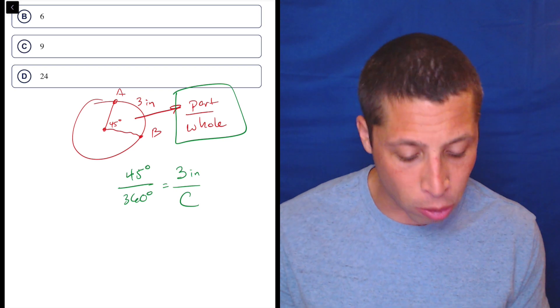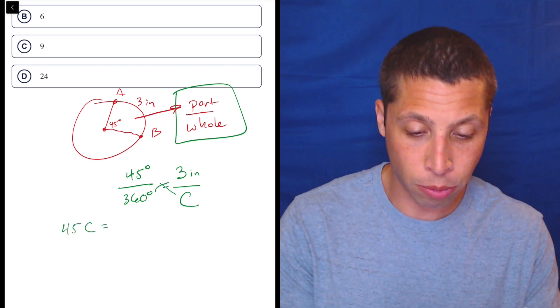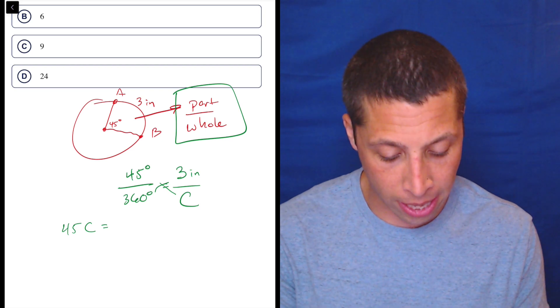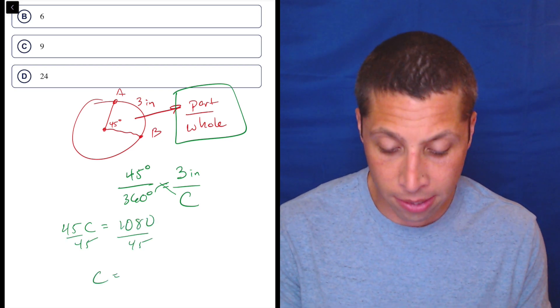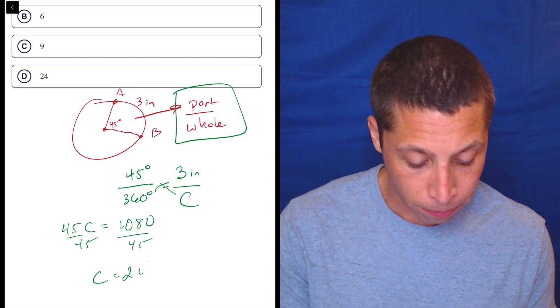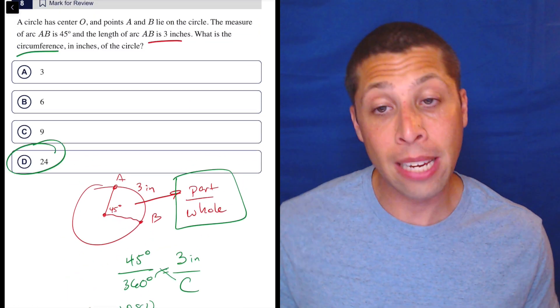Now, let's cross multiply. So 45C is equal to 360 times three is 1080 divided by 45, C is 24. Is that what they wanted, the circumference? Yep. 24D. That's the answer.